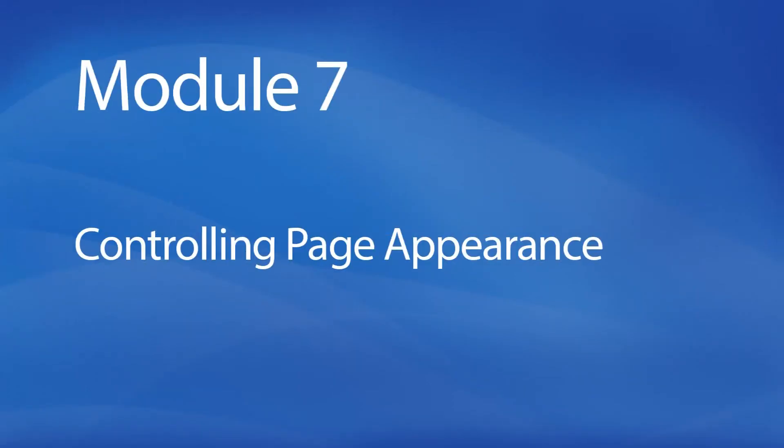In Module 7, we'll look at controlling page appearance — by applying a complete page border in color, which we'll print, as well as adding a watermark, headers and footers, and controlling page layout.